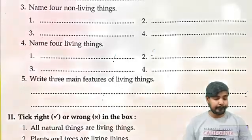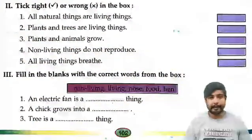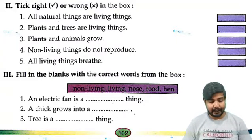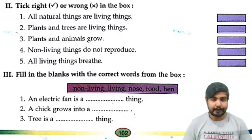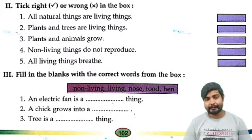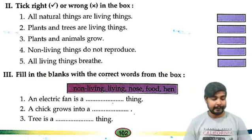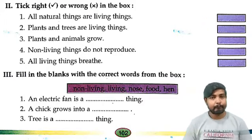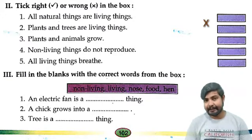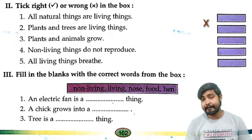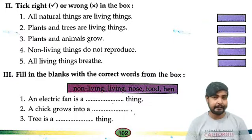Number 2: Tick right or wrong in the box. Number 1: All natural things are living things — this is wrong, cross. Kitne bhi natural things ho, woh sab living things nahi hain. Jaise ki mountain ek natural thing hai lekin living thing nahi hai. Toh number 1 answer is cross.